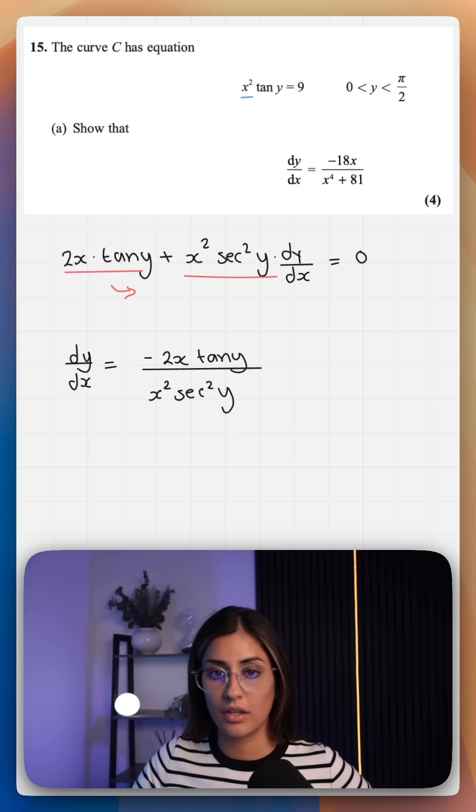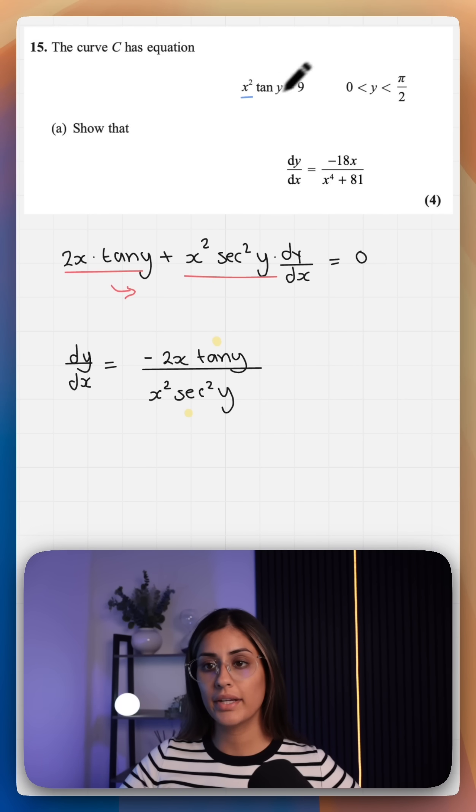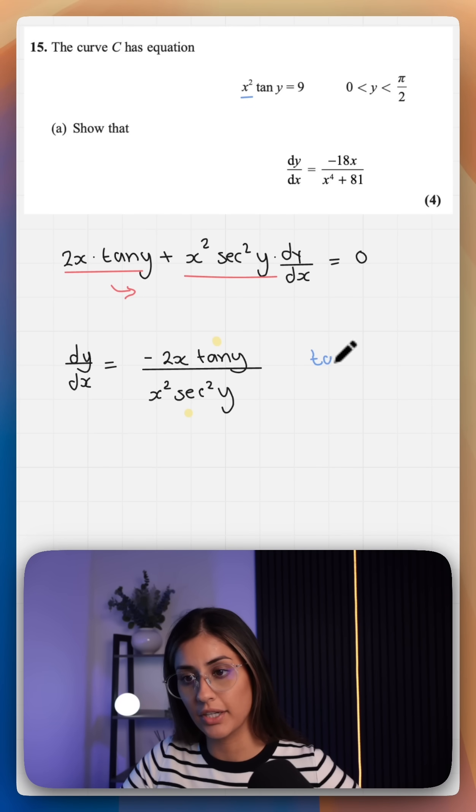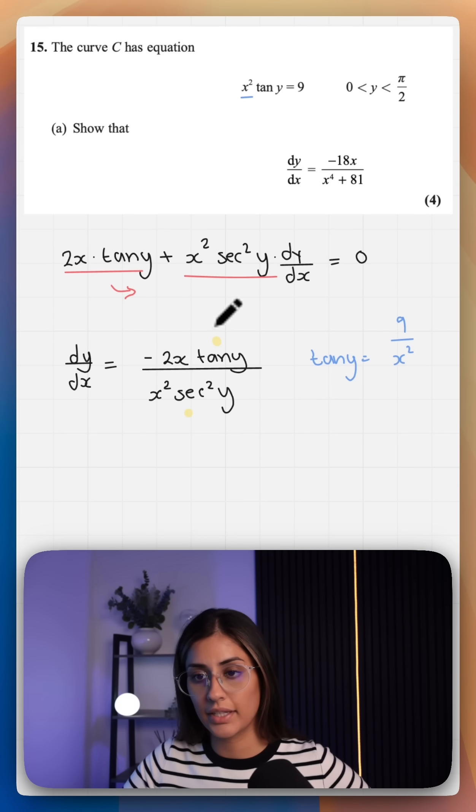We have our answer in terms of y, so we need to use our Pythagorean identities. All we're given is this equation here with x squared tan y equals 9. So we need to start by making tan y the subject, and that gives us 9 over x squared. That will take care of the numerator.